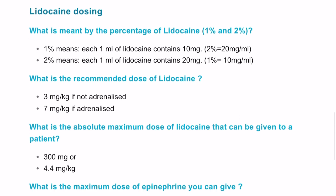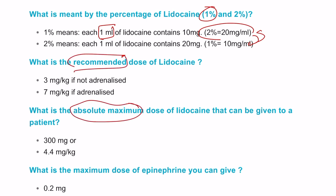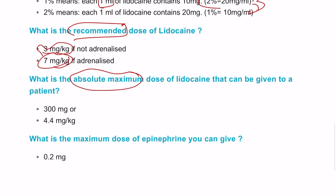These are the key questions to answer quickly: what does the percentage mean — 1% means 10 mg per ml, and 2% means 20 mg per ml. What is the recommended dose of lidocaine? There is a difference between recommended and absolute maximum. If non-adrenalized, the recommended maximum is 3 mg per kg; if adrenalized, it's 7 mg per kg. The absolute maximum is 300 mg, or 4.8 mg per kg.